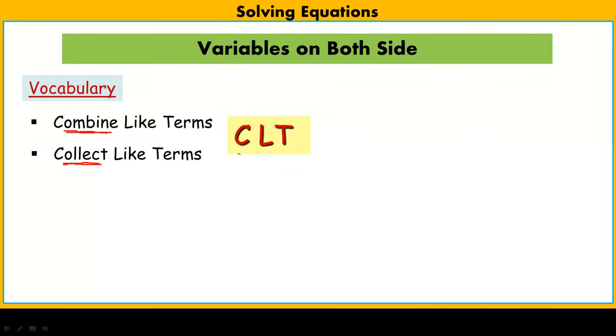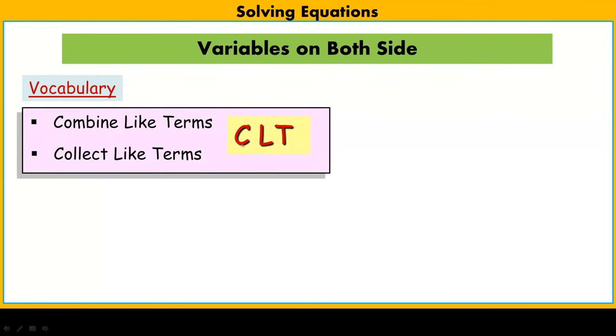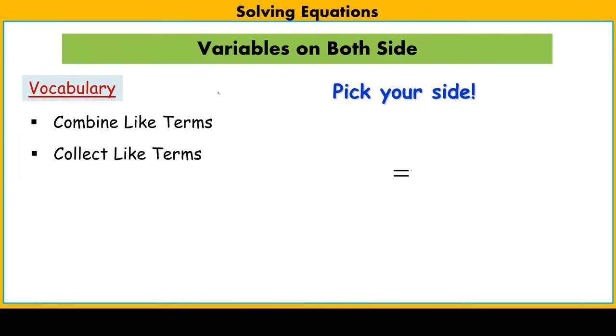Both of these I abbreviate often as CLT and you'll see that in a lot of my videos and PowerPoints. Since we're going to deal with variables on both sides of the equation, what you have to do is pick your side. It doesn't matter which side you pick, but you're going to collect all your variable terms on one side and all your constant terms on the other. That's our whole chore: to put everything, all our variable terms on one side and our constant terms on the other side of an equation.